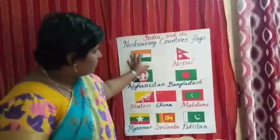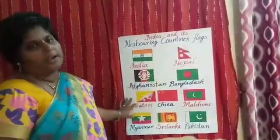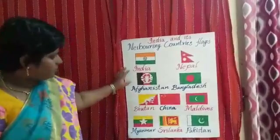These neighboring countries are having the same boundary with our country. India is a big country with 28 states and 8 union territories. It is bounded on three sides with the oceans — Bay of Bengal, Indian Ocean, and Arabian Sea. And on the other side, it has the beautiful Himalayas.